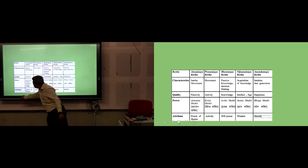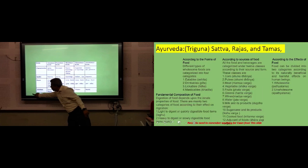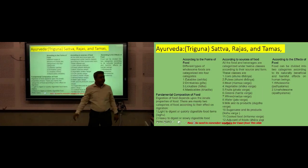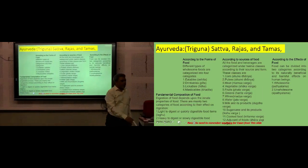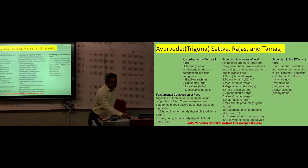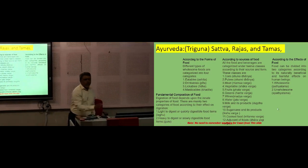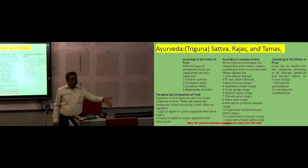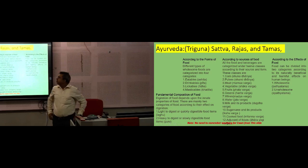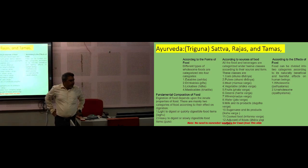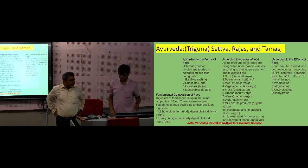In Ayurveda, the triguna classification is also included: sattva, rajas, and tamas.